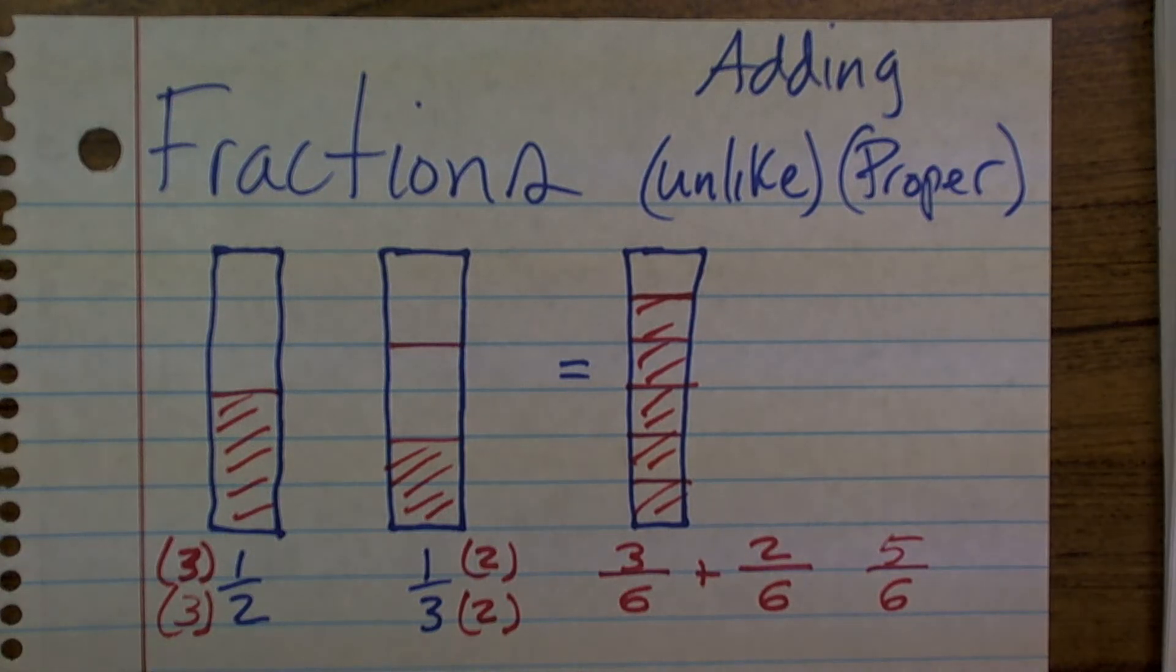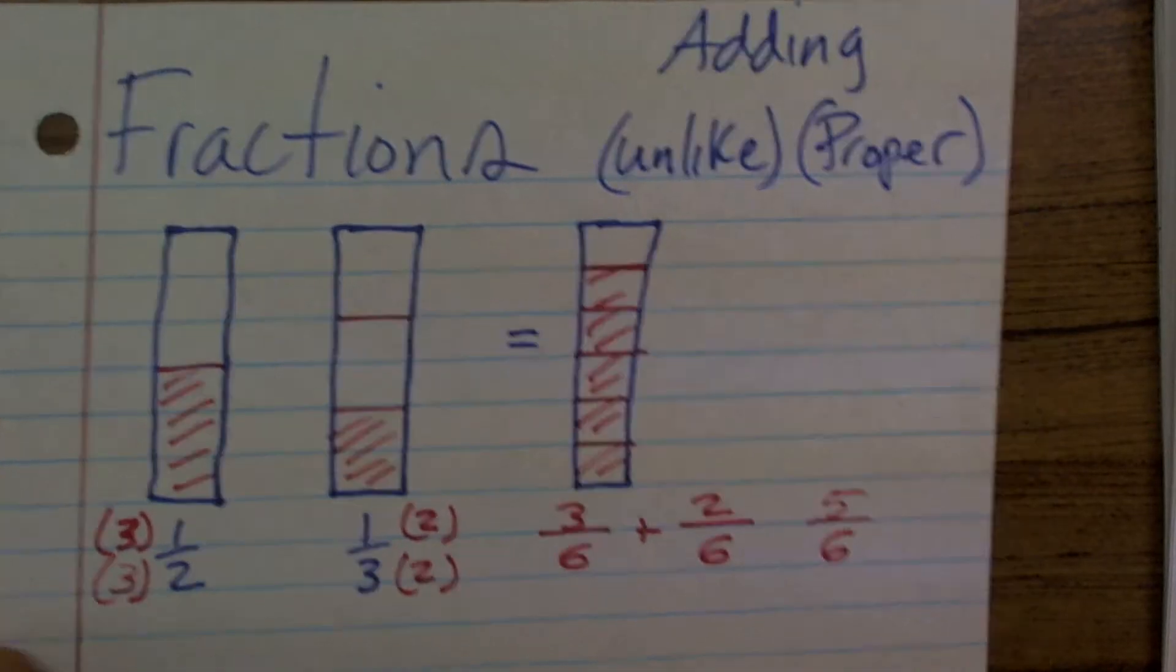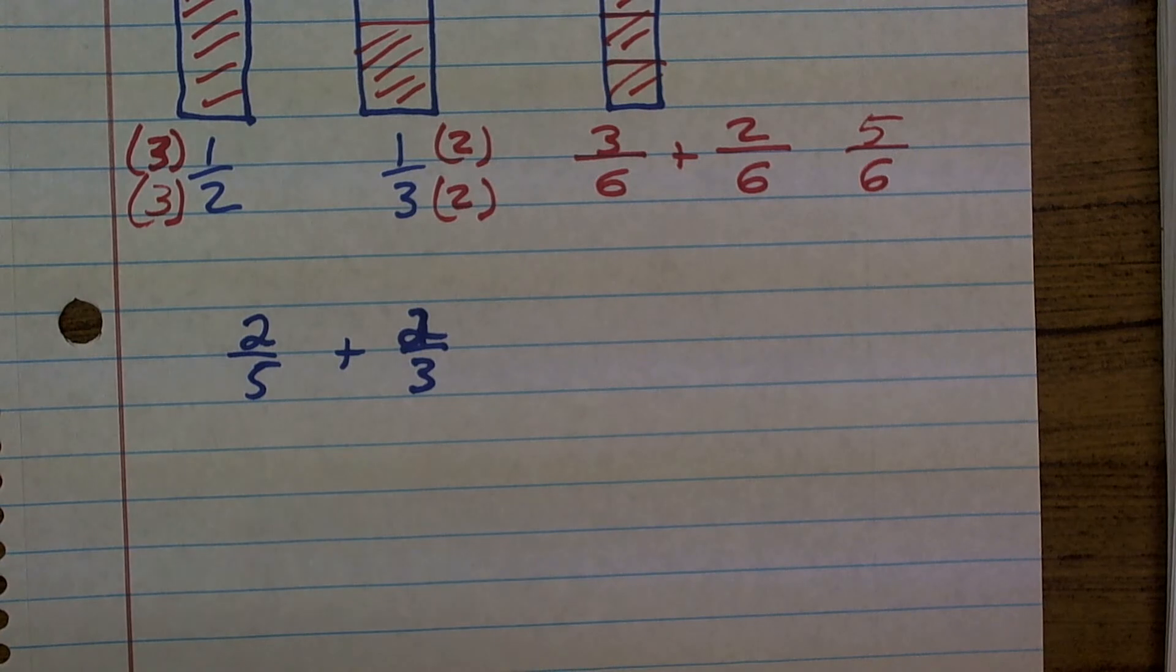All right, ladies and gentlemen, what I want to do is go over another example of adding fractions when you have unlike denominators. So here I'm going to have 2 fifths plus 2 thirds.